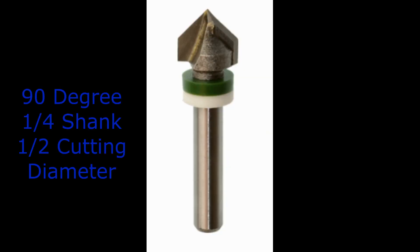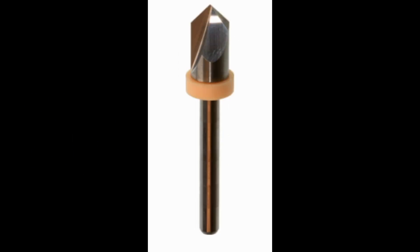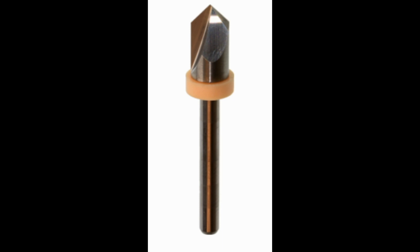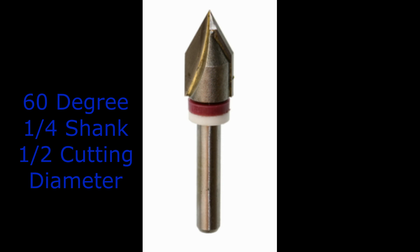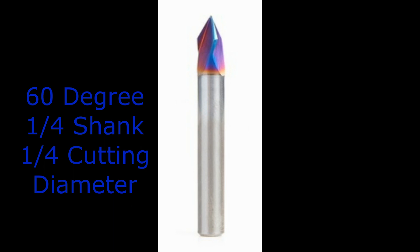Your 90-degree bit is for wider, shallower cuts. If you need a lot of material removed but aren't as worried about detail, the 90-degree bit is your best option. The 60-degree bit is for deep, narrower cuts — it's more precise and detailed. It will need more passes compared to the 90-degree, but it's going to give you that detail you're looking for in your project.